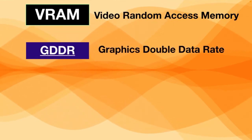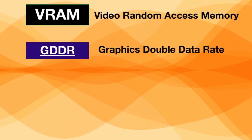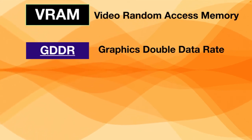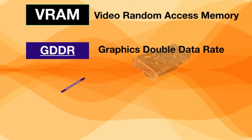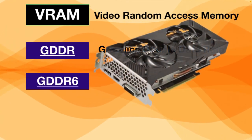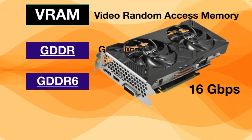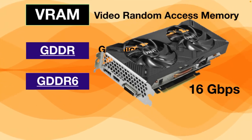The latest version of VRAM is GDDR6, which can achieve data rates up to 16 gigabits per second. To wrap it up: the more RAM your computer has, the faster it runs. Every open application consumes RAM.